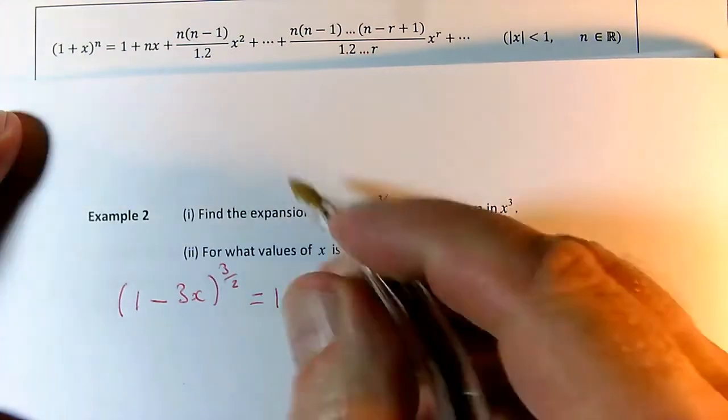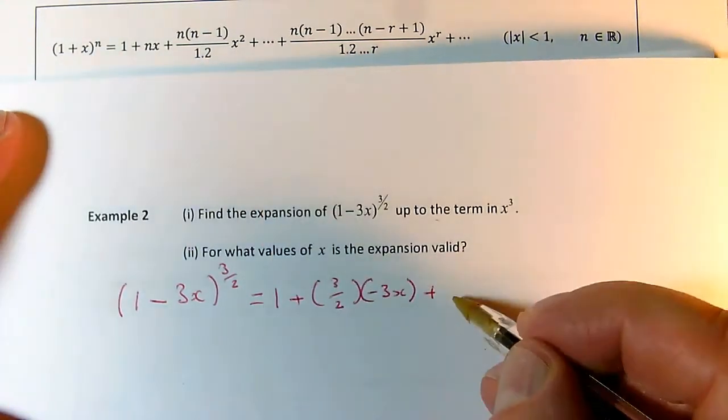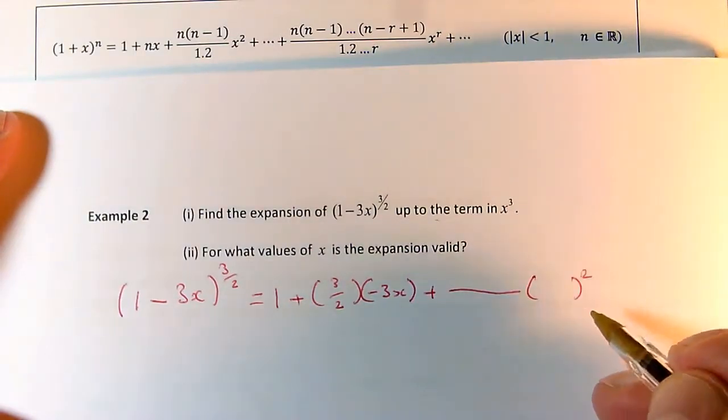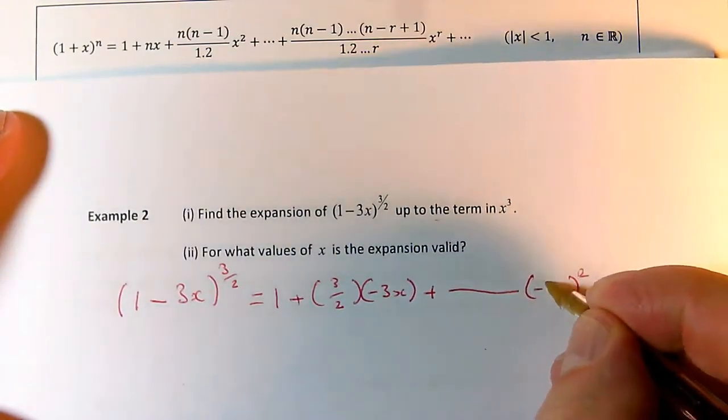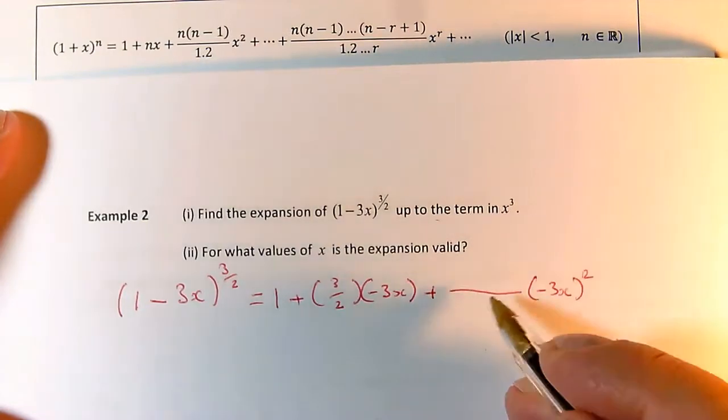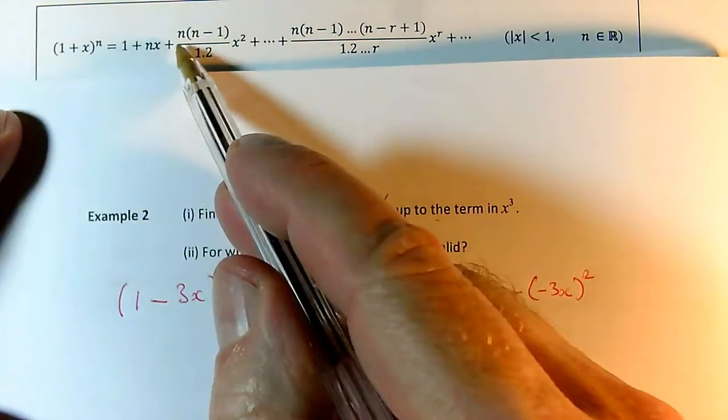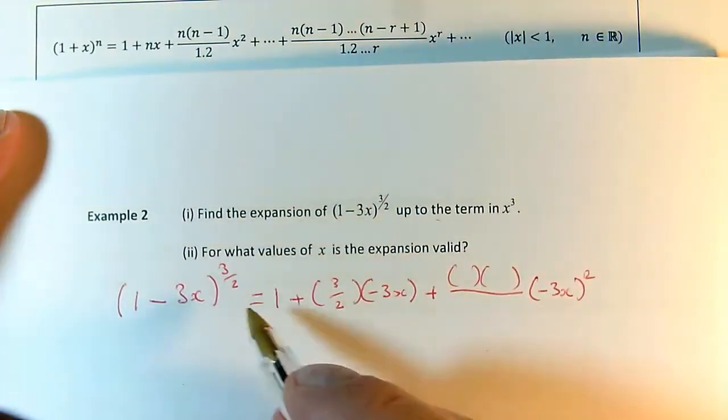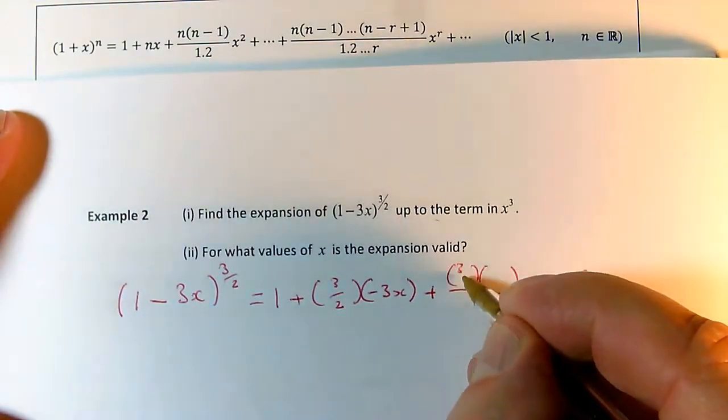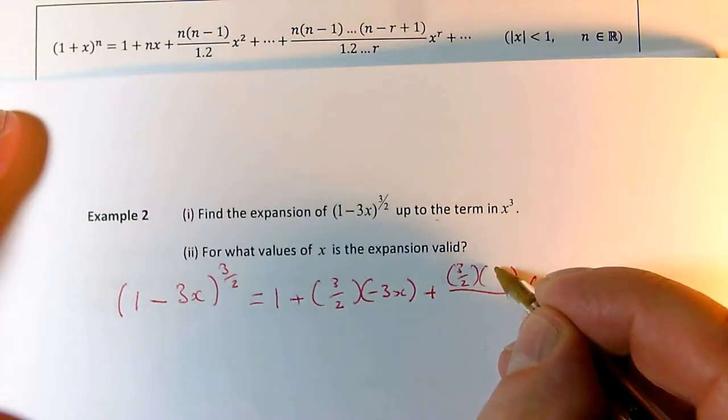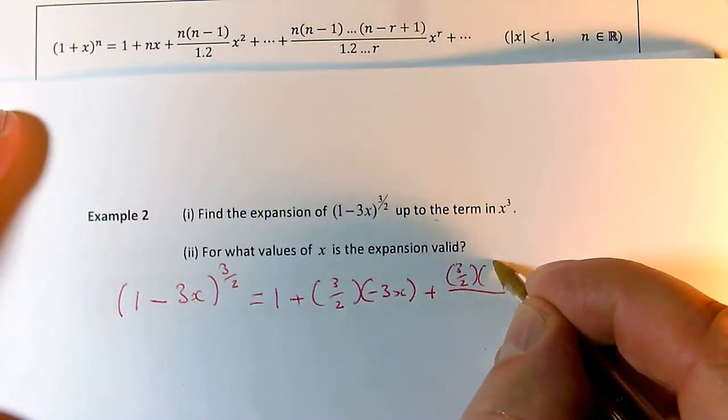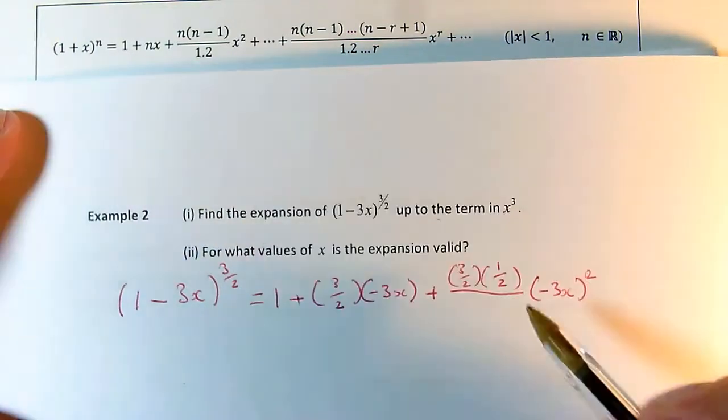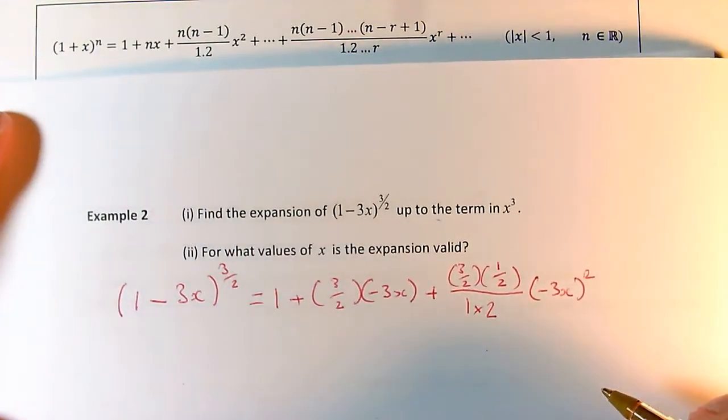And then when I get on to the next term, this x squared term is going to be after the fraction, I'm going to have bracket squared, not just x squared. And this is going to be minus 3x in the bracket. What do I have on the top of the fraction? Well, it's n times n minus 1. So that's bracket times bracket. What's my n? It's 3 over 2. n minus 1 is 3 over 2 times that take away 1. 3 over 2 take away 1 is a half. Divided by, on the bottom, I've got 1 times 2. Remember that dot is a times.